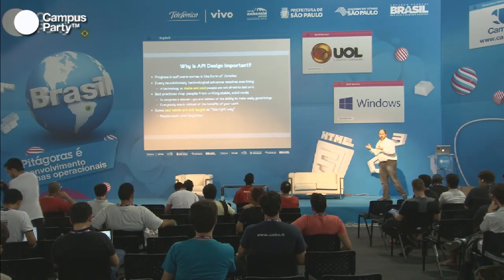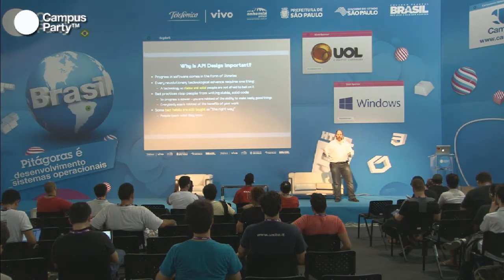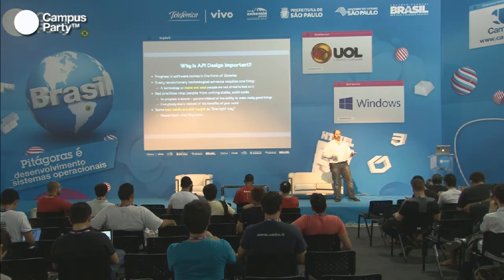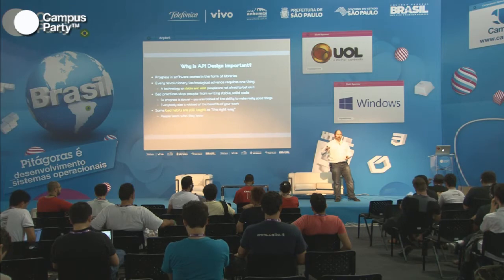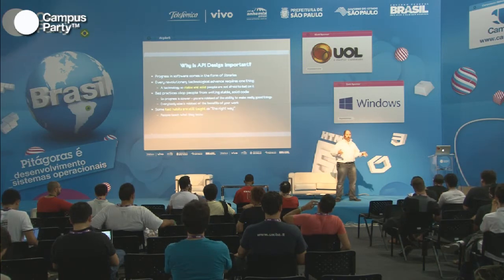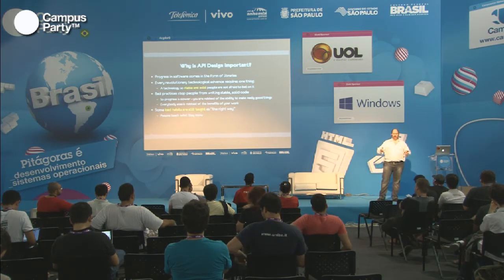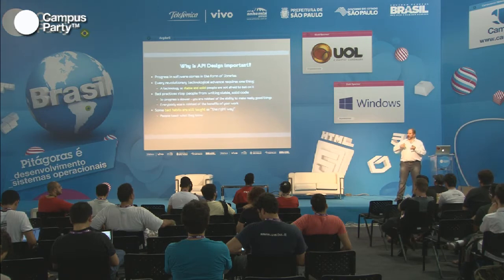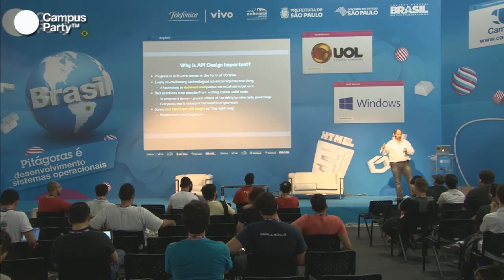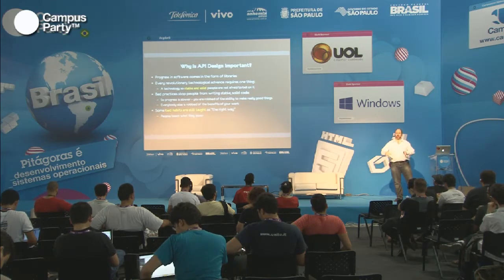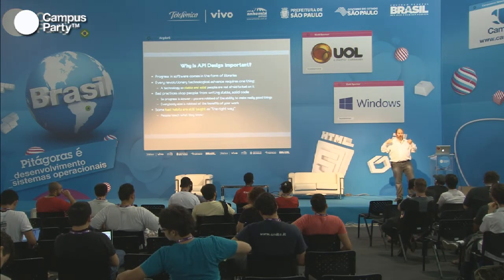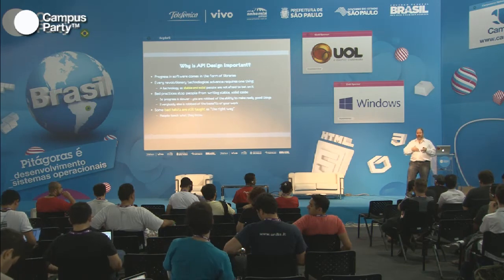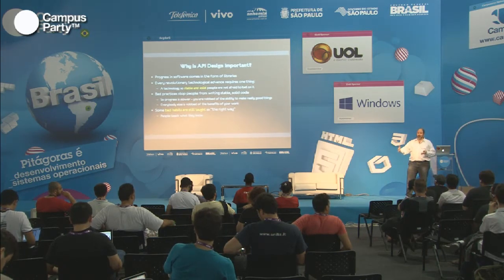Why is this sort of thing important? The history of software evolution is really a history of libraries getting so solid and so good that you don't even think about whether they are there or not. You never wonder if today your network interface is going to work — it works, it's a really solid piece of technology. When people don't learn good habits for API design, it's harder to write things that are solid, that you can build on and build on, which makes life better for all of us doing software.